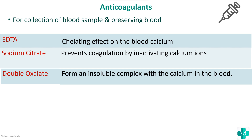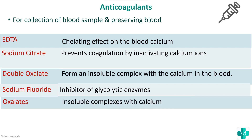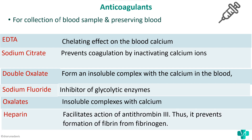Sodium fluoride has a slightly different mechanism: it is an inhibitor of glycolytic enzymes, which in turn causes a decrease in glucose and thereby prevents clotting. Oxalates form insoluble complexes with calcium. Finally, heparin facilitates the action of antithrombin 3. Heparin is an example of an endogenous anticoagulant — it can be produced inside the body — but can also be produced synthetically, with the same mechanism of action.